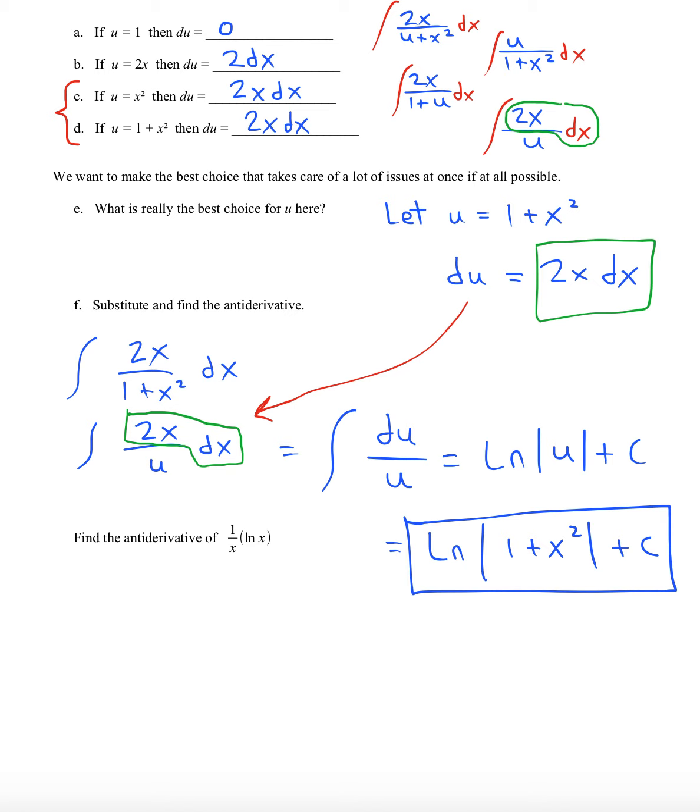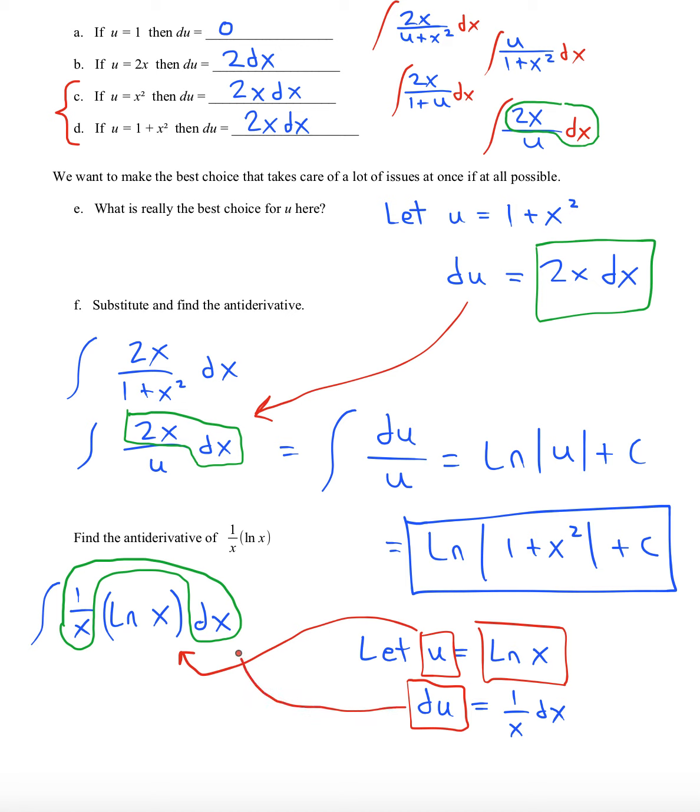Try this technique with 1 over x times ln x. See if you can identify what should be replaced with a u. The best choice for u here would be ln x. The reason why is ln x's derivative is also in the integrand. du equals 1 over x dx. And that is in the problem. It's right here.